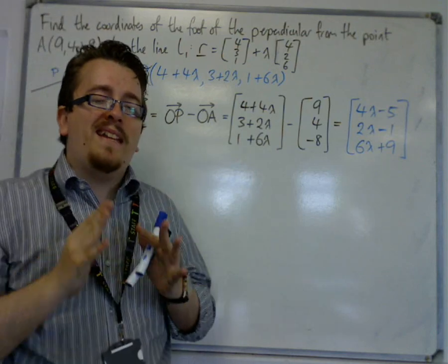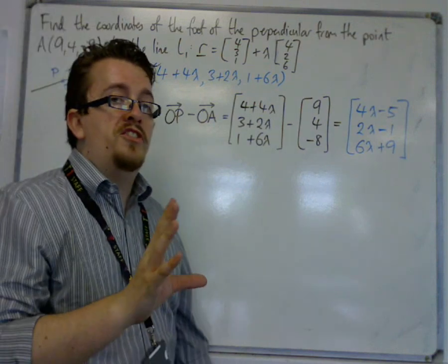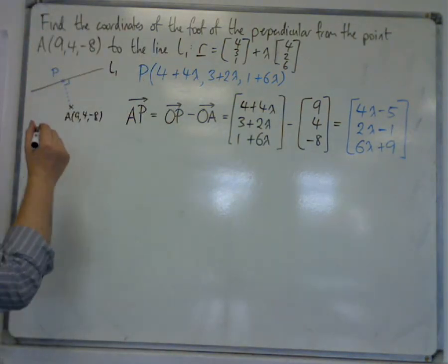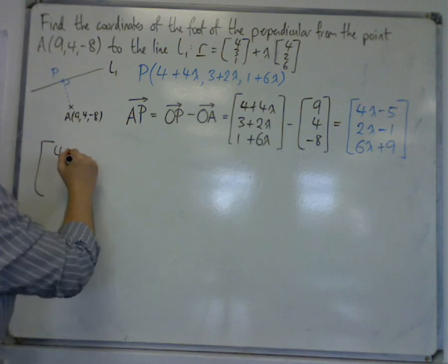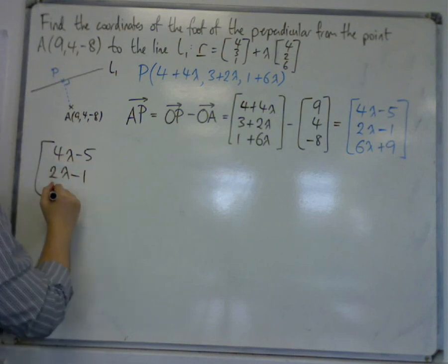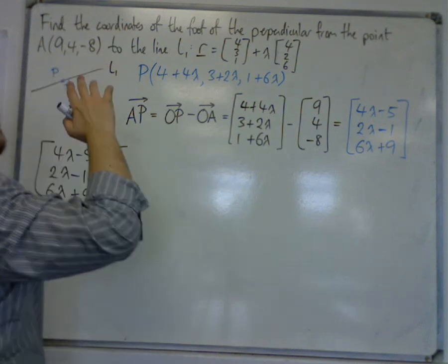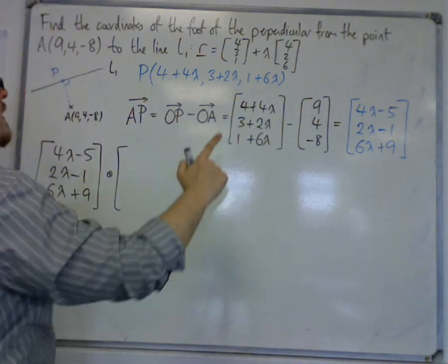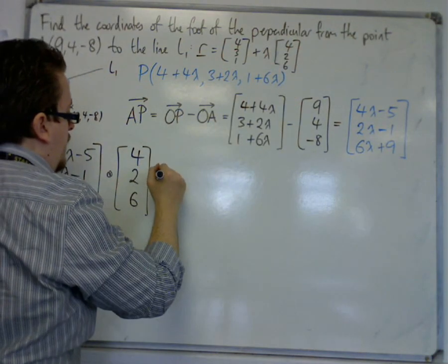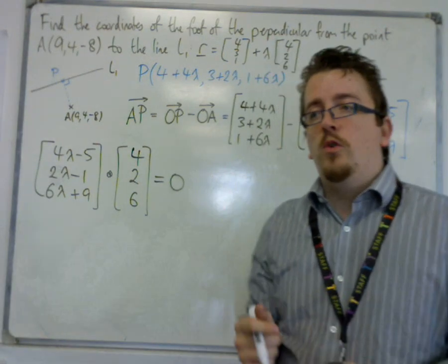And the property is that they meet at right angles. Now in a previous video, you should have seen that the scalar product can be used to show that two lines are perpendicular, that they meet at right angles. So what we need is the vector AP, such that when I use the scalar product and dot it with the direction vector of L1—remember we use the direction vector, not the position vector—so that's 4, 2, 6. When I dot it with that vector, I need to get 0. And it is this condition that will allow me to work out the value of lambda.